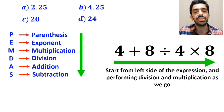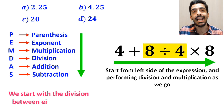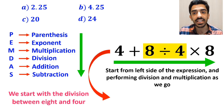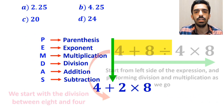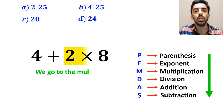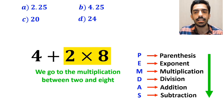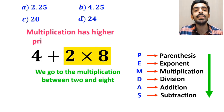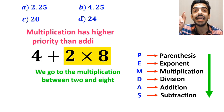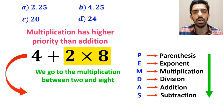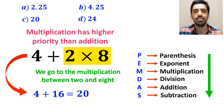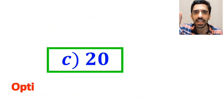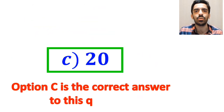We'll start with the division between 8 and 4, writing 4 plus 2 multiplied by 8. In the next step, we go to the multiplication between 2 and 8, because multiplication has higher priority than addition. This simplifies to 4 plus 16, which ultimately gives us the answer 20. Therefore, option C is the correct answer to this question.